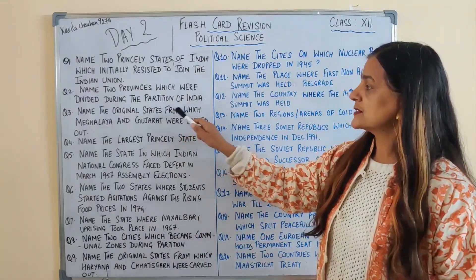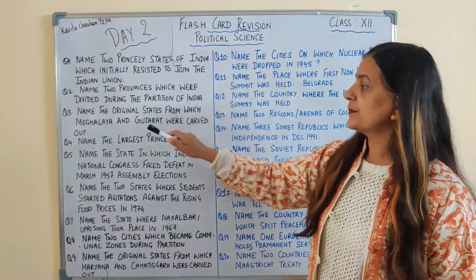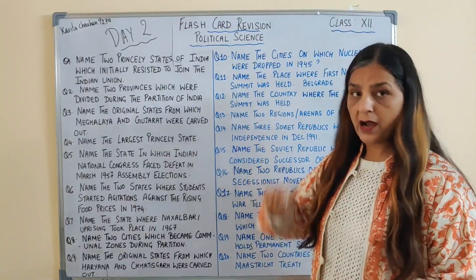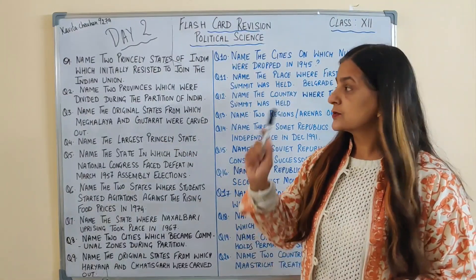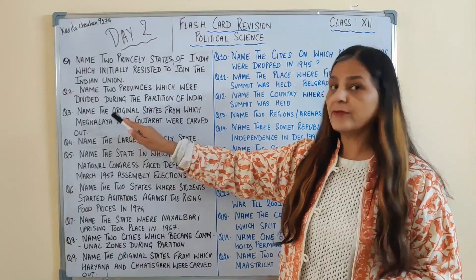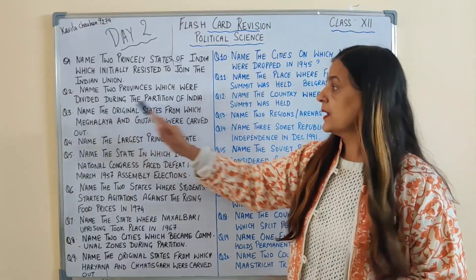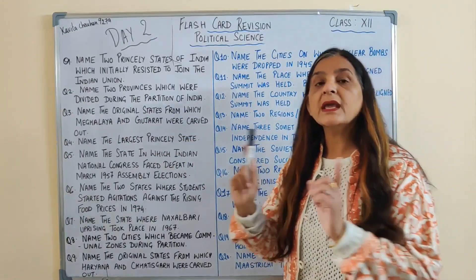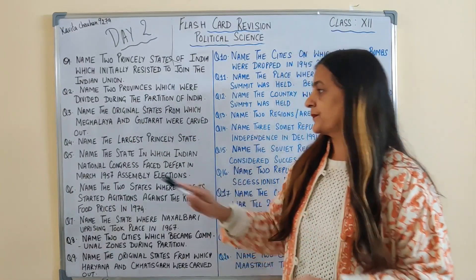Name the original states from which Meghalaya and Gujarat were carved out. So Meghalaya was carved out of Assam, and Gujarat was carved out of Bombay state.